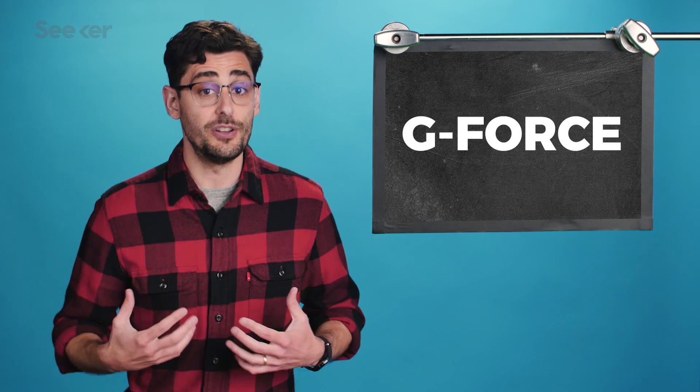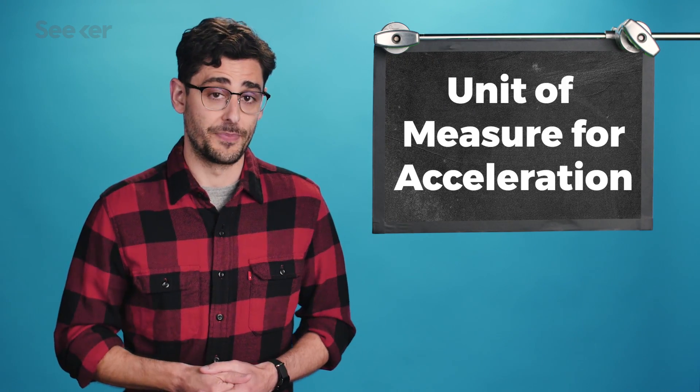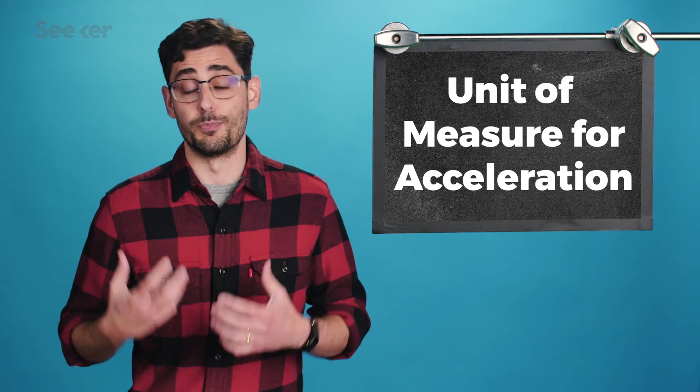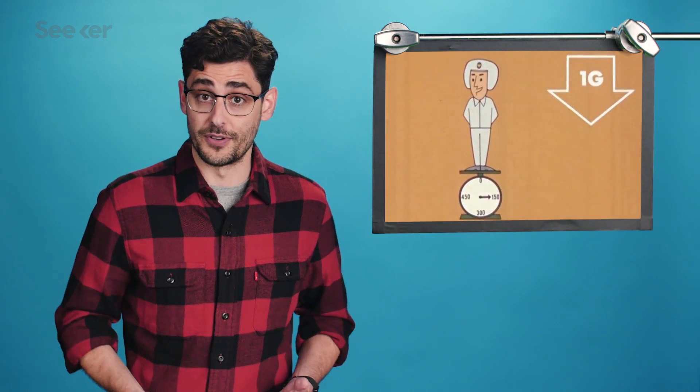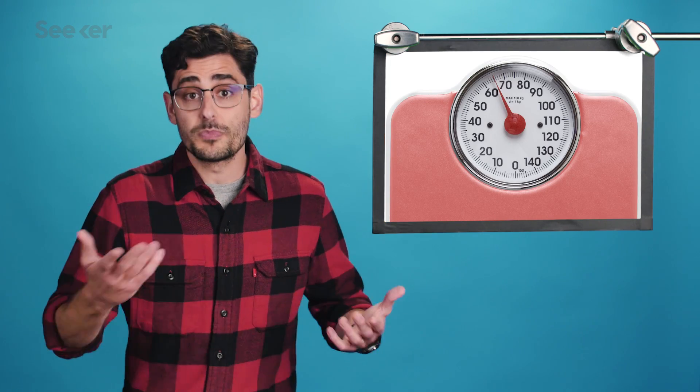This is because of what happens to the human body when it experiences g-force, or the unit of measure for acceleration. It's based on Earth's gravitational pull. One g is the force applied to an object by gravity while on Earth's surface. It's also the force that determines how much we weigh. So simply put, if a human experiences three g's, they experience a force on their bodies that is three times their weight.